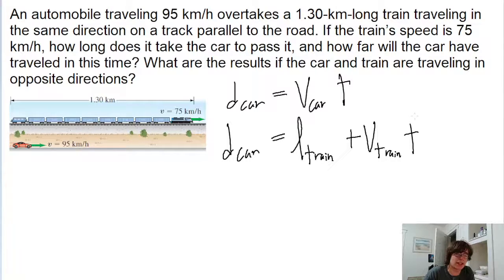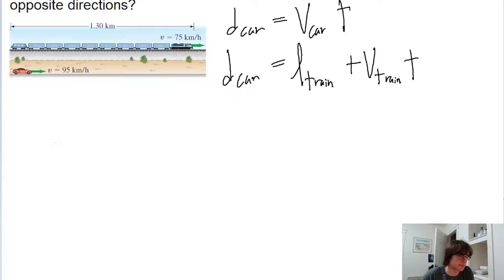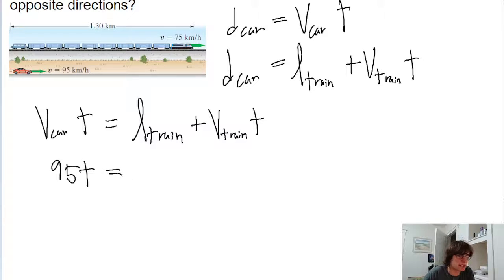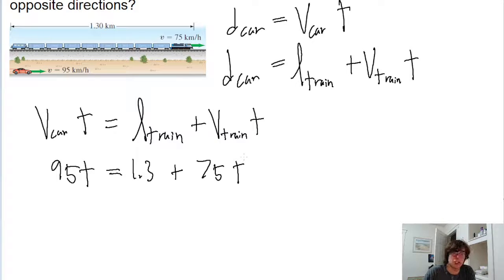The first part of the problem is asking us to find the amount of time t. Since both formulas accurately represent the distance the car travels, let's set them equal to each other. So the speed of the car times time equals the length of the train plus the speed of the train times time. That gives us 95t equals 1.3 kilometers plus 75 kilometers per hour times t.